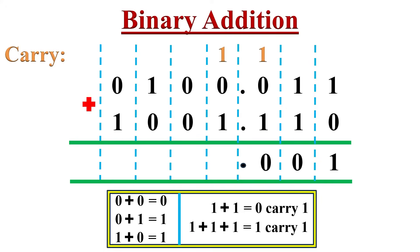The radix point must be aligned with the numbers above. Now in the next column, we have 1 plus 0 plus 1, just like before — that is 1 plus 1 — which equals 0 with 1 as carry to the next column. In this column, we need to add 1 plus 0 plus 0 plus 0, which equals 1.